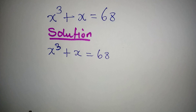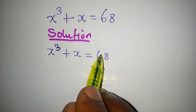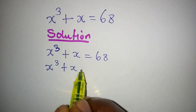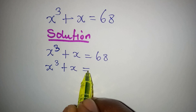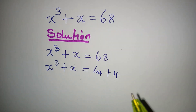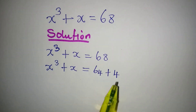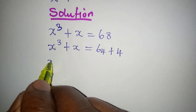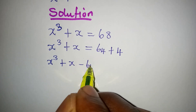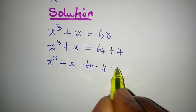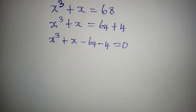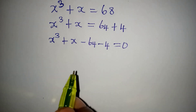What we are going to do is to rewrite 68. So we have x to the power of 3 plus x equal to 68. I can bring 64 out of 68, then plus 4. Now if both of these go to the left, we'll have x to the power of 3 plus x minus 64 minus 4 equal to 0.